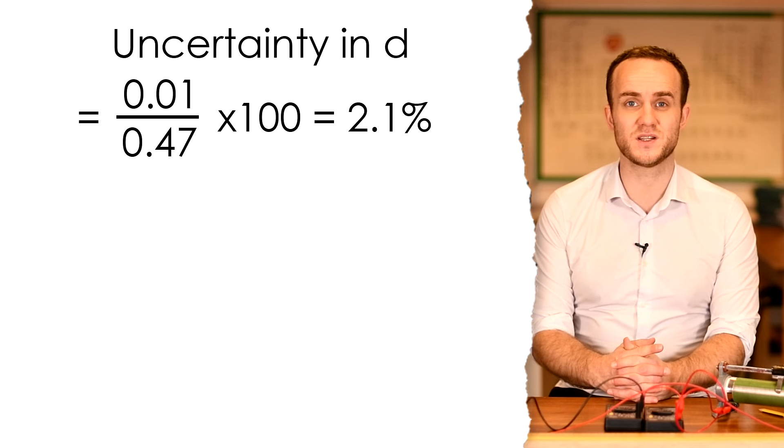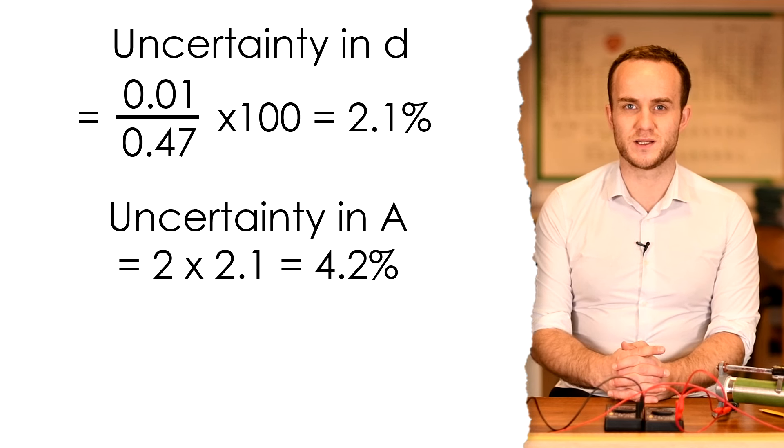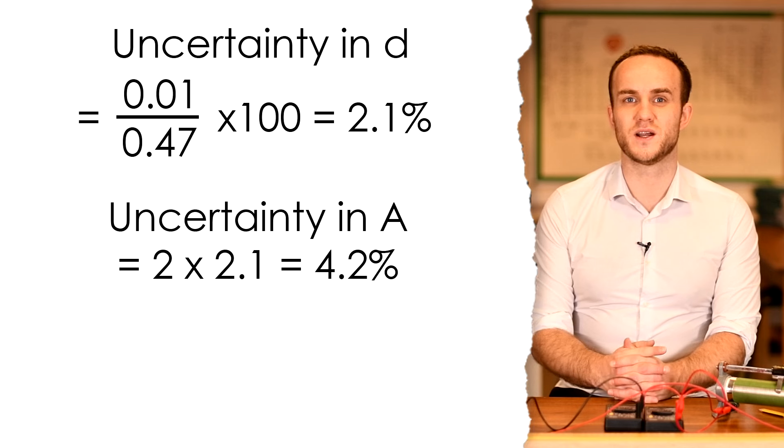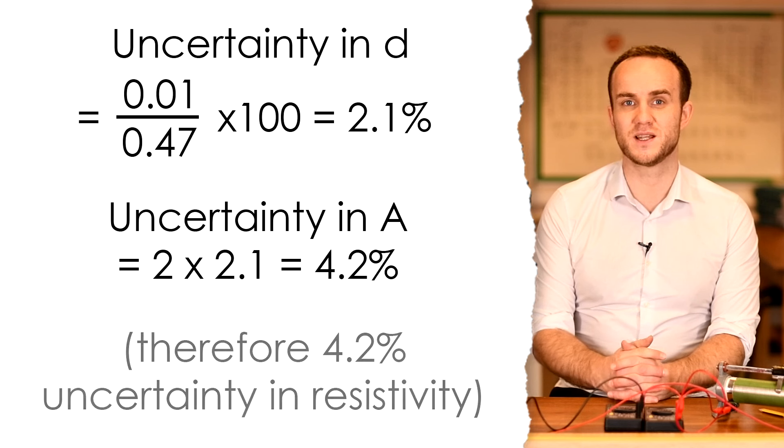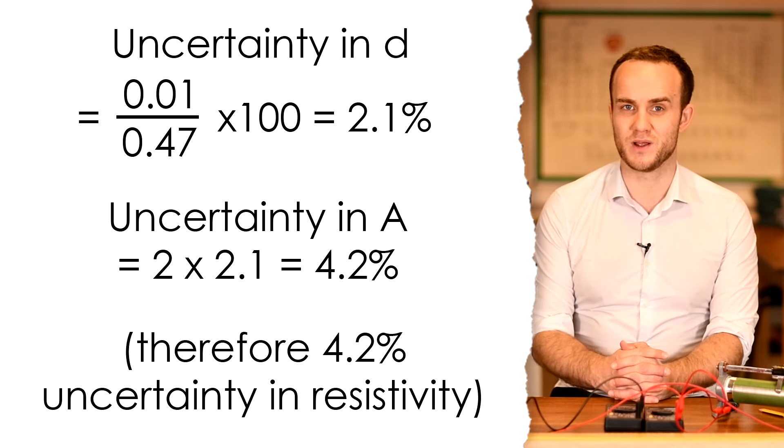However, the area is calculated by pi d squared over 4. So therefore to find the percentage uncertainty in d squared we double the 2.1 to get 4.2%, and so that means that we have a 4.2% uncertainty in the area as well.